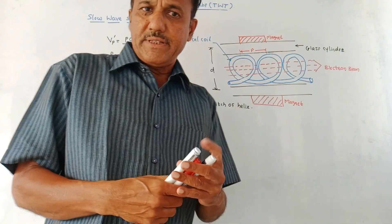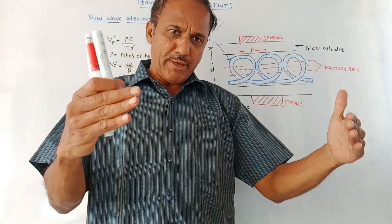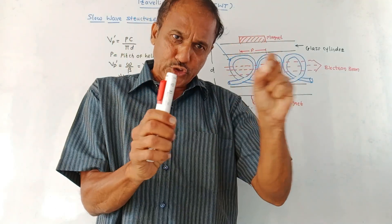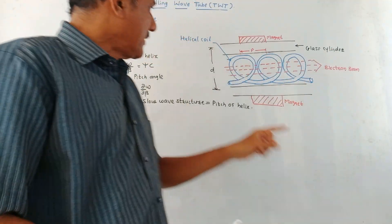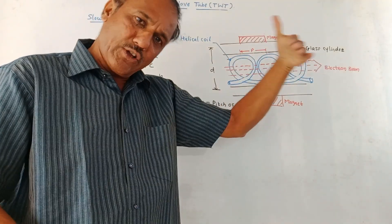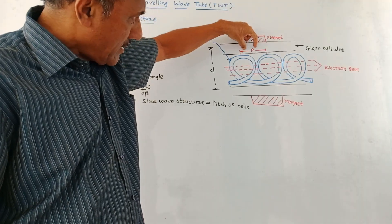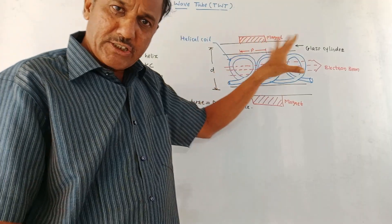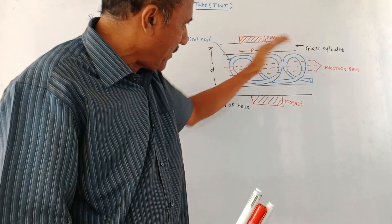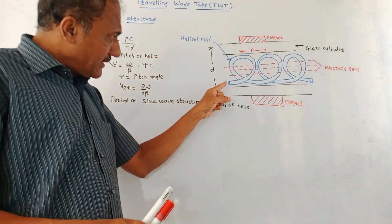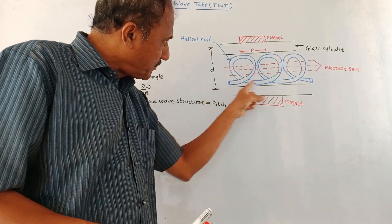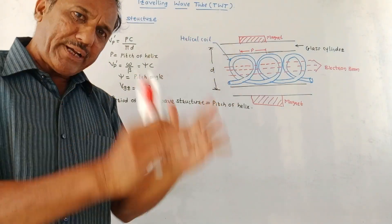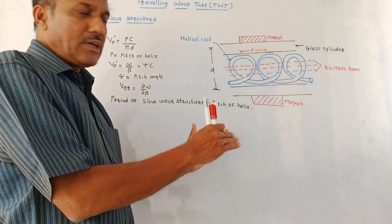Now let us discuss the important concept of slow wave structure. There are two major parts: the electron beam and the RF field. There is a speed mismatch between the two, so slow wave structures are used to reduce the speed of the field so that there will be proper interaction. The slow wave structure is in the form of a helix, or it can be in the form of a zigzag. The pitch is the distance between two turns. Glass cylinders are used at the upper and lower ends, with distance D between them. Two magnets are placed so that there is proper alignment of the electron beam. Whenever the RF field travels through this helical coil, it has to travel extra distance compared to the electron beam, enabling proper interaction between the electron beam and RF field.